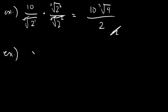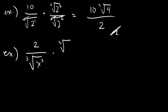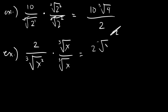Let's have our final given: 2 over the cube root of x squared. You will multiply this by the same root — same base — but figure out how many more are needed to complete the index of 3. We have already 2, so we need 1 more. So multiply by the cube root of x raised to 1. This simply gives us 2 cube root of x — that's it, because it cannot be simplified any further.